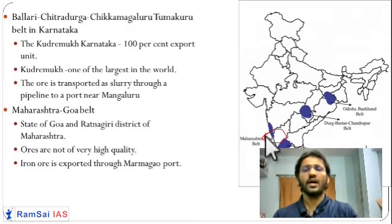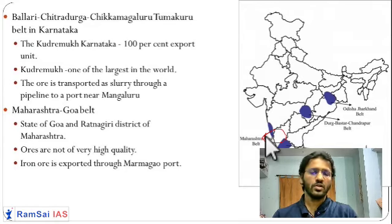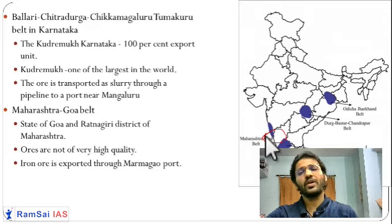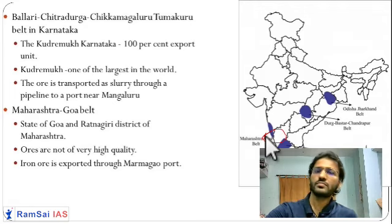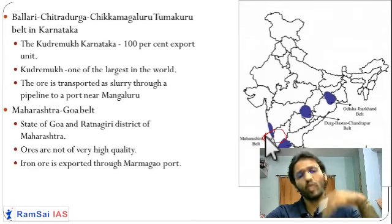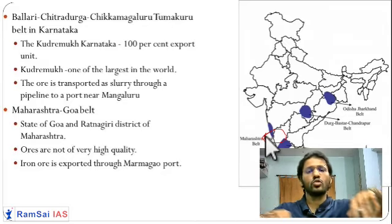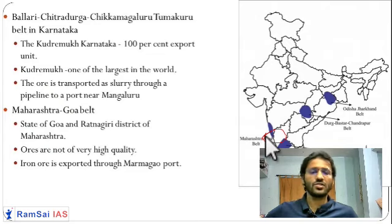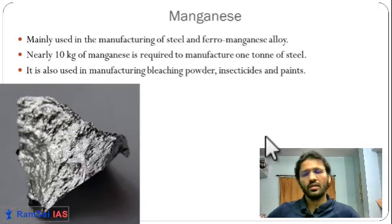Parts of Goa also produce iron. Kudremukh in Karnataka — meaning 'horse face' in Kannada — is one of the highest peaks of the Western Ghats and is famous for very high-quality hematite iron ore. Because of this high quality, the ore is exported. It is not transported by train; instead, water is mixed with it to create slurry, which is pumped through a pipeline to Mangalore port for export to Japan and the Middle East. The Sindhudurga region of Maharashtra is also important for iron ore.